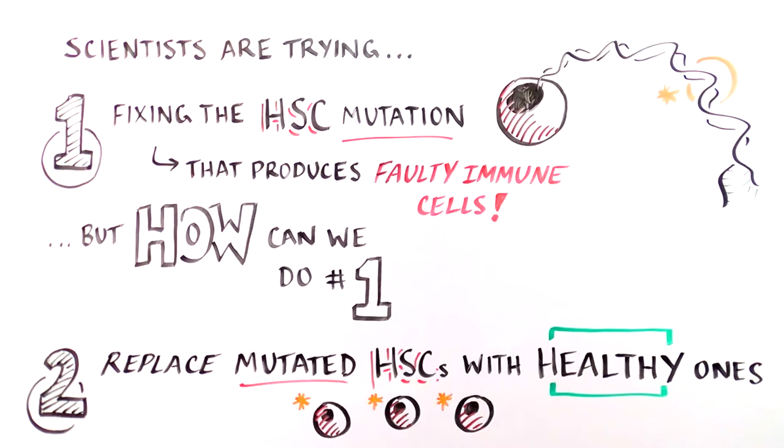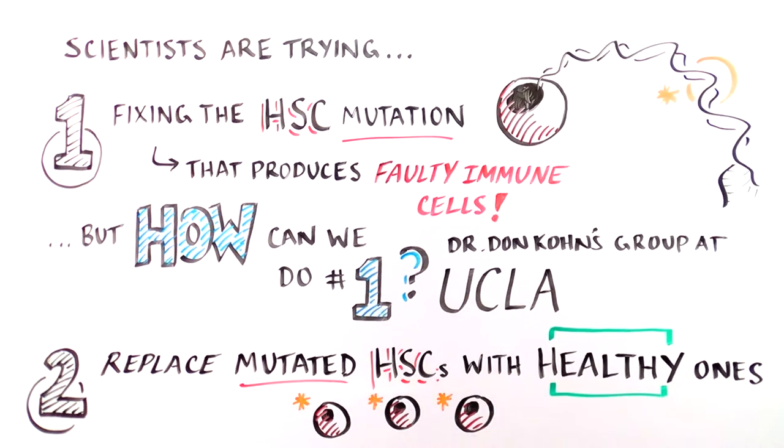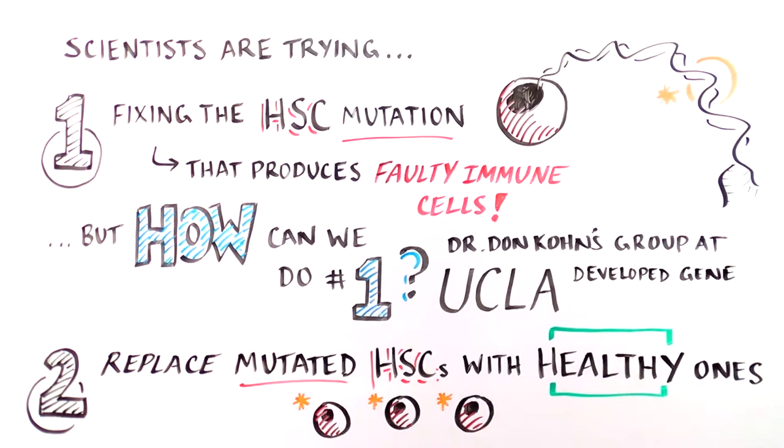Let's start by discussing how we can go about fixing the mutation. Researchers in the group of Don Cohn at UCLA and others have been tackling this problem since the 1990s. They have developed a strategy to repair a gene mutation in HSCs from SCID babies, a method we'll call gene addition.